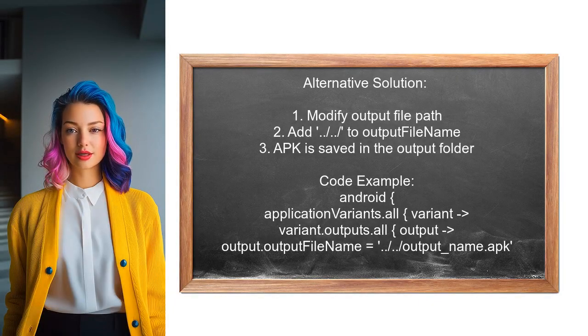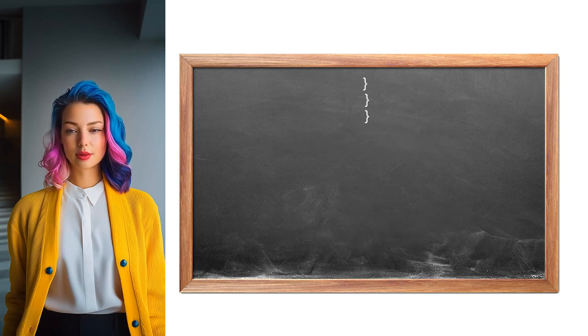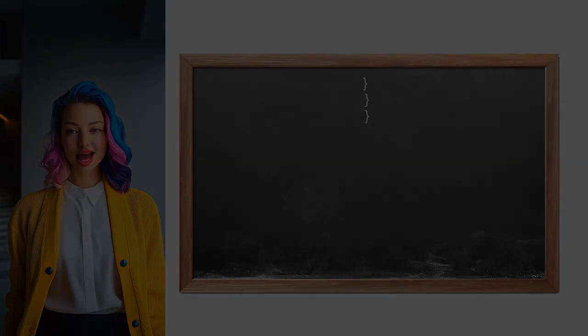One alternative approach involves modifying the output file path for the generated APK. A user suggests adding a specific prefix to the beginning of the output file name, which directs the APK to be placed in a specific output folder.